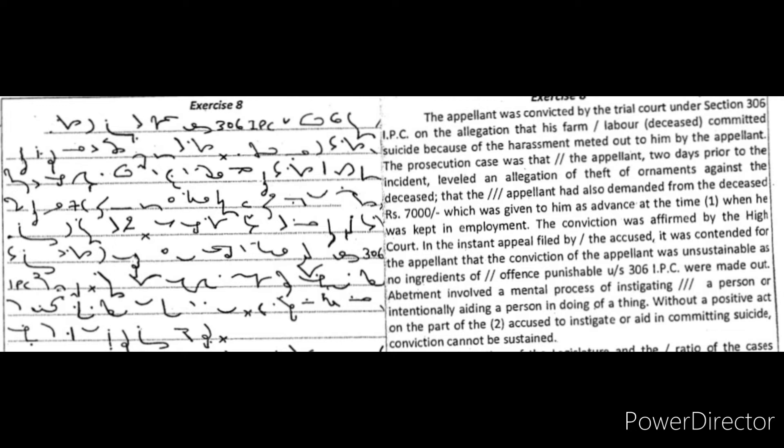it was contended for the appellant that the conviction of the appellant was unsustainable as no ingredients of offense punishable under Section 306 IPC were made out. Abetment involved a mental process of instigating a person or intentionally aiding a person in doing of a thing.